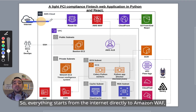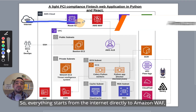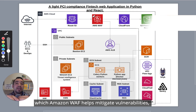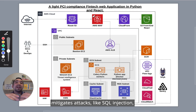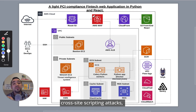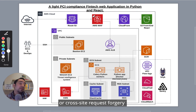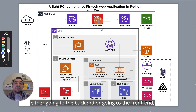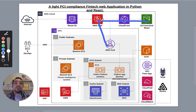Everything starts from the internet directly to Amazon WAF, which helps mitigate vulnerabilities and attacks like SQL injection, cross-site scripting attacks, or cross-site request forgery — any rule from the OWASP Top 10 — either going to the backend or going to the frontend.